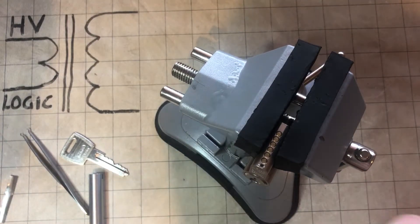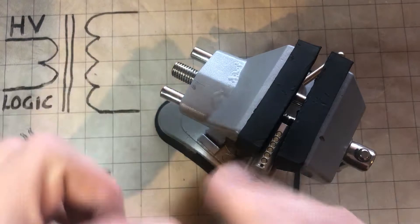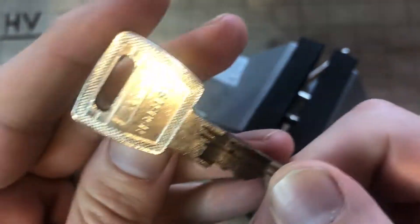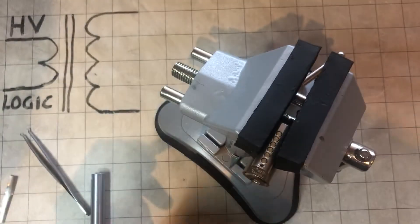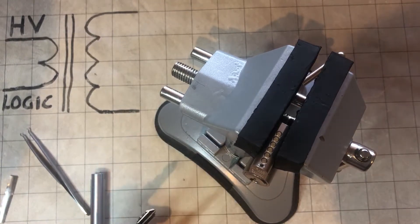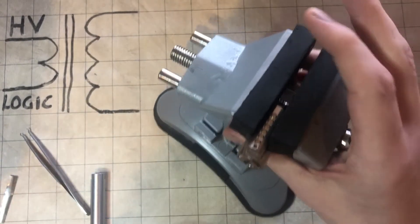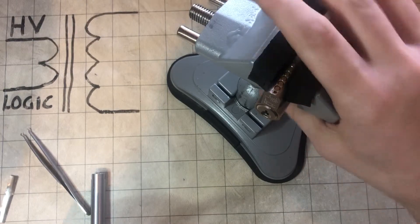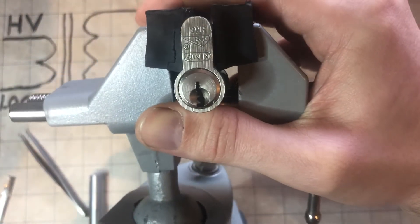All right, today we're going to be picking the Nemef NF2, which is quite similar to the Nemef NF4, but the NF4 is a dimple lock whereas this is just a pin tumbler.